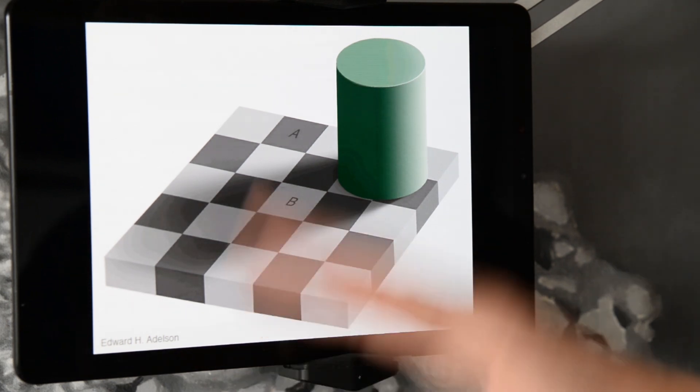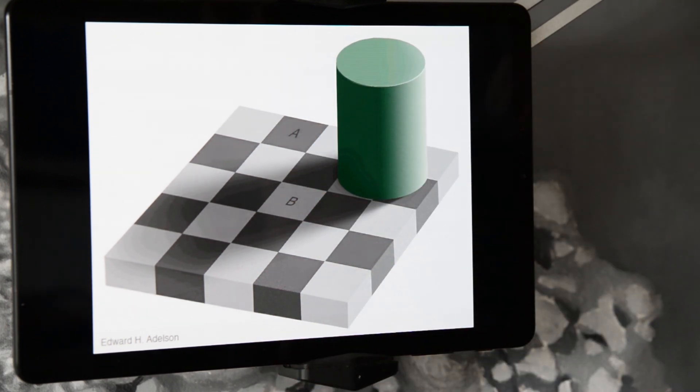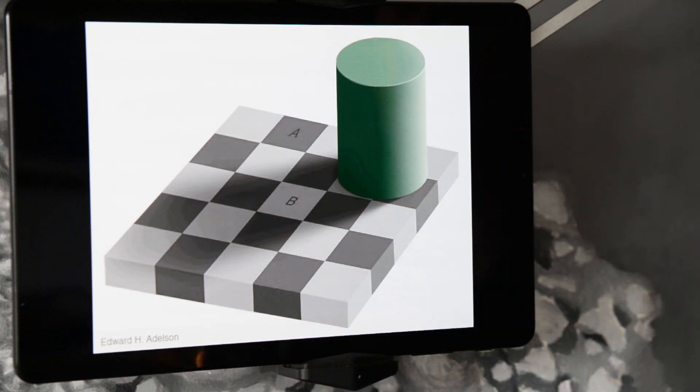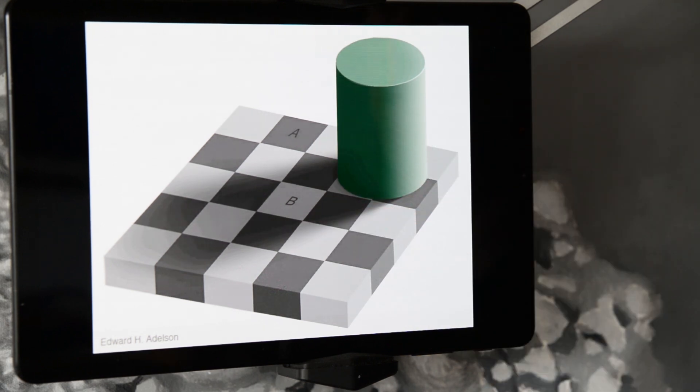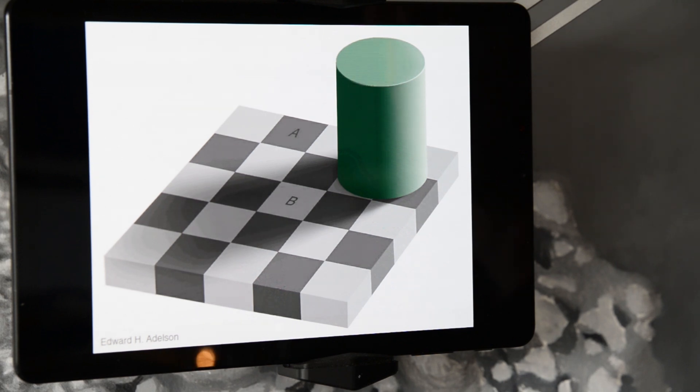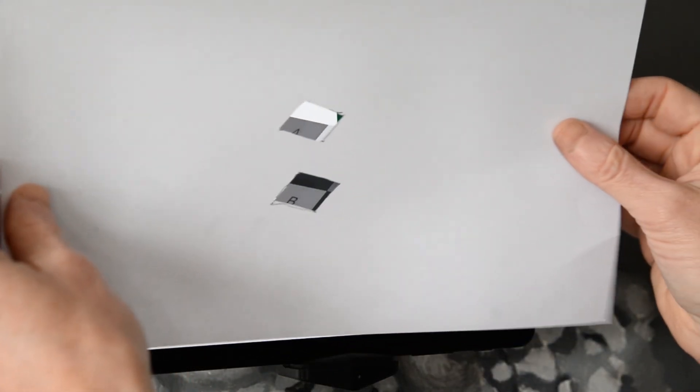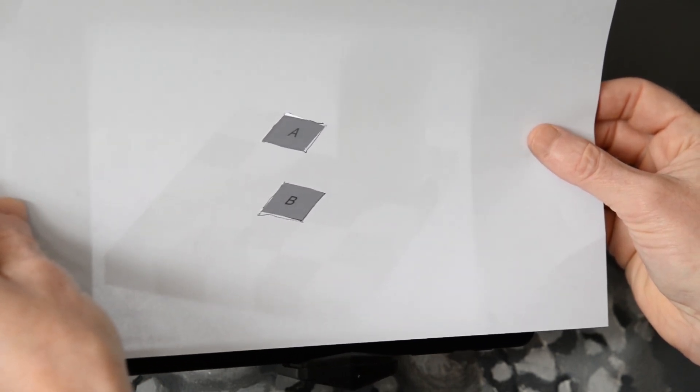So it's a chess style board with a green cylinder on it. The light is coming from the right-hand side, and the cylinder is causing a shadow. And you've got squares A and squares B are marked. Square A is a dark square. Square B is a light square. And what's fascinating about this is, I'm sure that you can guess, is that it's an optical illusion. And what you realize is that squares A and B are exactly the same tone.